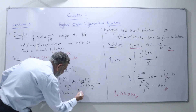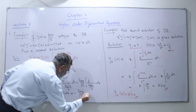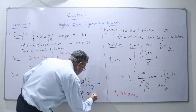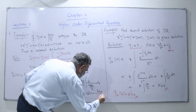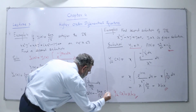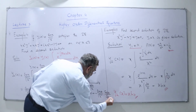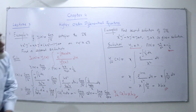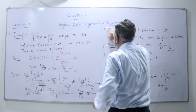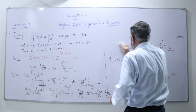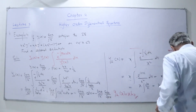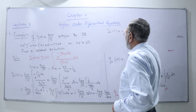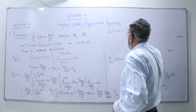So we get minus sin(x) over root of x times cot(x). I have taken the minus sign outside, and cot(x) is cos(x) over sin(x). So we get minus sin(x) over root of x times cos(x) over sin(x). The sin(x) cancels with sin(x), and my y2(x) is equal to minus cos(x) over root of x.